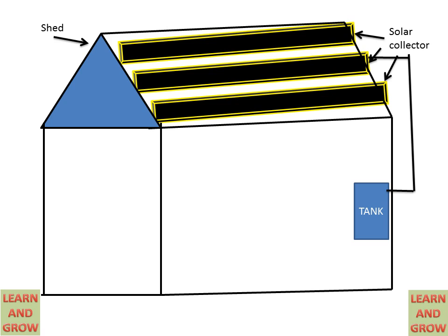This solar collector is connected to the water storage tank, in which hot water will be collected. This tank is connected to the heat exchanger so that heat exchange can take place from the water to the air.